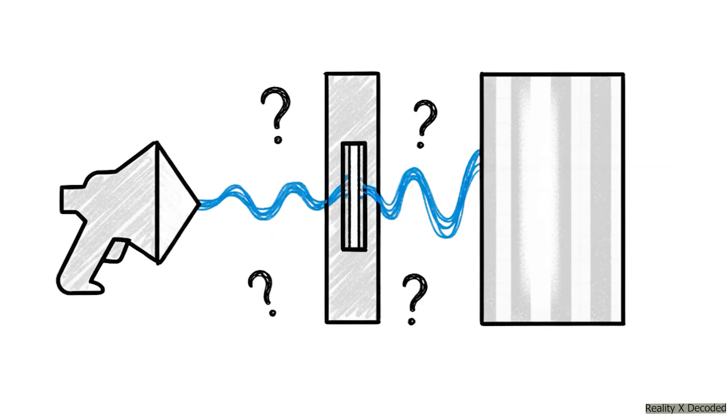But that is not what happens. As thousands of these individual electron impacts build up on the screen, one after the other, they form a wave interference pattern. Just let that sink in for a second.